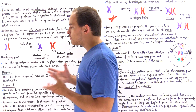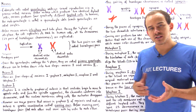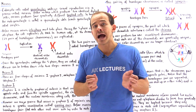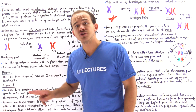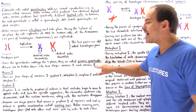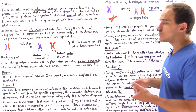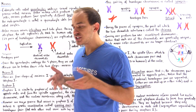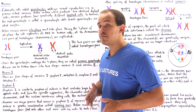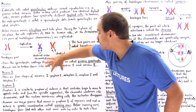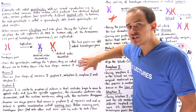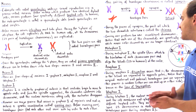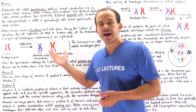Now let's get into the process of meiosis. Meiosis is the process by which a single gametocyte divides into four genetically different haploid cells. We can divide the process of meiosis into two stages: meiosis 1 and meiosis 2. In this lecture we're going to focus only on meiosis 1. Just like mitosis can be divided into four stages, meiosis 1 can be divided into four stages: prophase 1, metaphase 1, anaphase 1, and telophase 1.